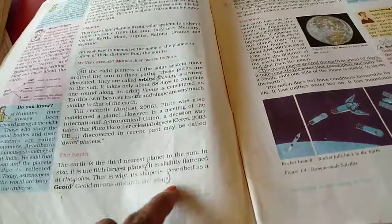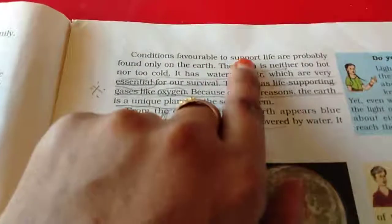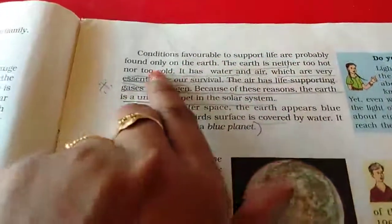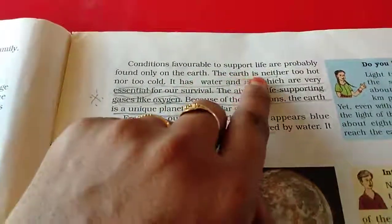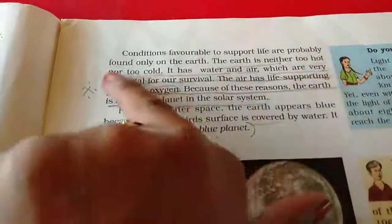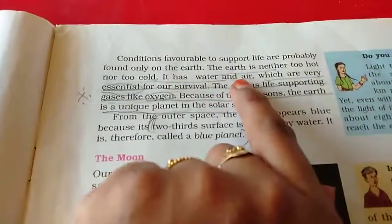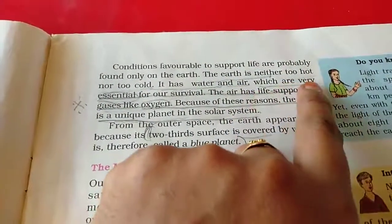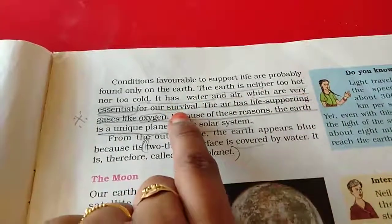Geoid means an earth-like shape. Conditions favorable to support life are probably found only on the earth. The earth is neither too hot nor too cold.